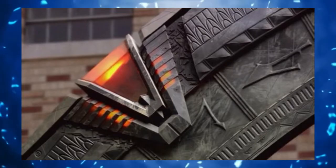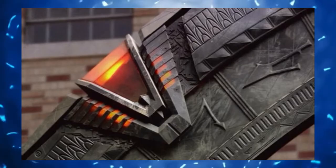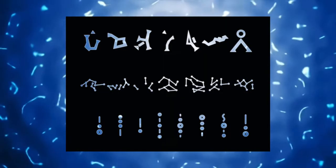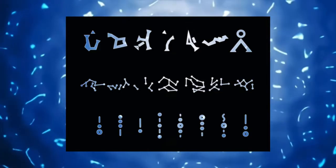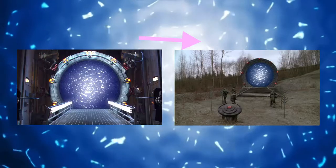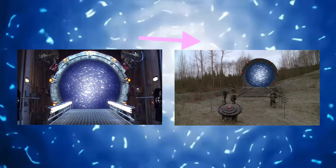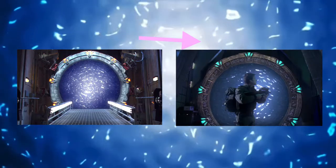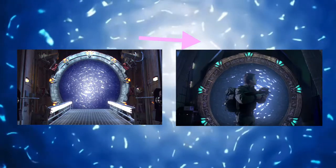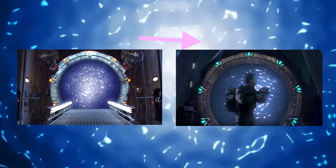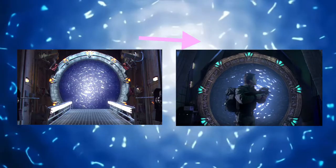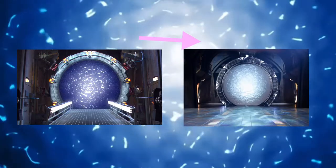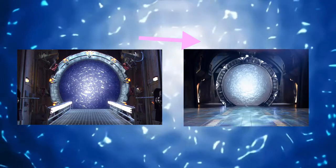How do Stargate addresses work? There are three types of addresses that a traveler can dial. The first is a standard intergalactic 7-chevron address. The second is an extragalactic 8-chevron address, and the third is an unspecified distance 9-chevron address.